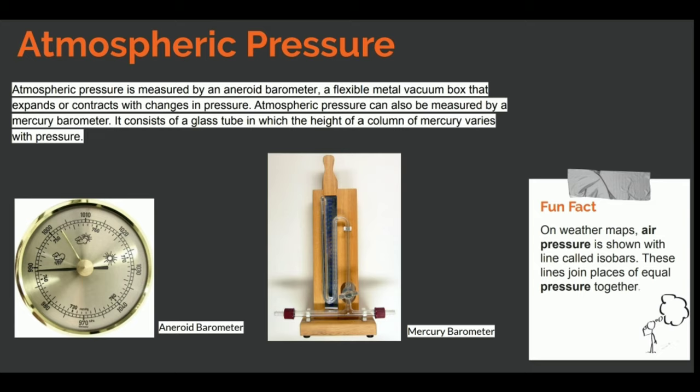Fun fact: on weather maps, air pressure is shown with lines called isobars. These lines join places of equal pressure together. When we go further into maps, hurricanes and storms, we'll see the use of isobars and how they are used on maps.